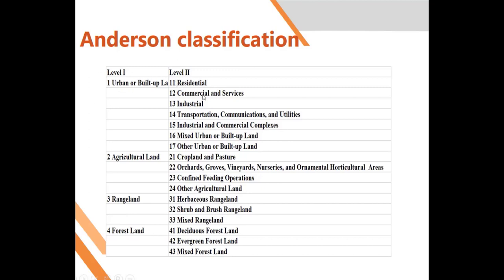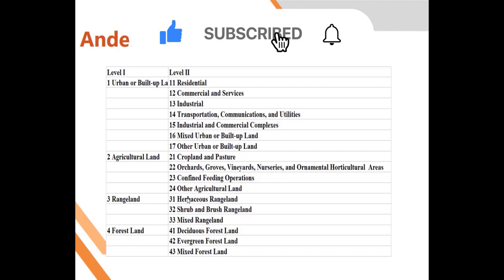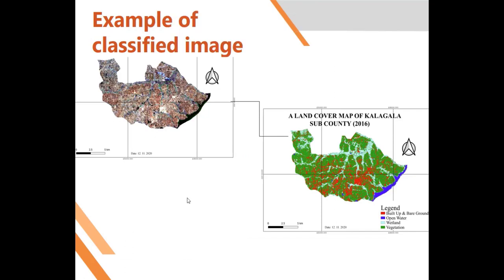If you go deeper into level two, you can group the urban area into residential, commercial, industrial, or mixed urban, and so on. Before you do any remote sensing classification, you should always set up a classification scheme — this will help you know which classes you are going to deal with and how you are going to name them. This is an example of a classified Landsat 8 RGB image where we classified into four classes: built-up, open water, wetland, and vegetation.